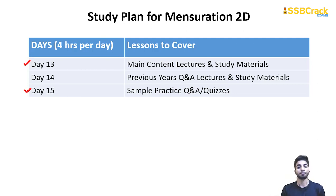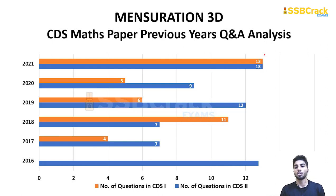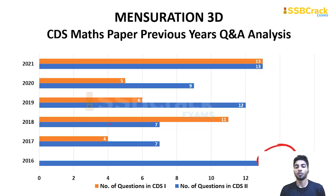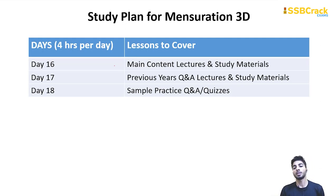Coming to Mensuration 3D, here you cover volume questions. The maximum number of questions asked is 14 and the minimum is 4. This is also a scoring topic. Day 16 to Day 18 you will devote only to Mensuration 3D — three days covering main concept, previous year questions, and sample practice.